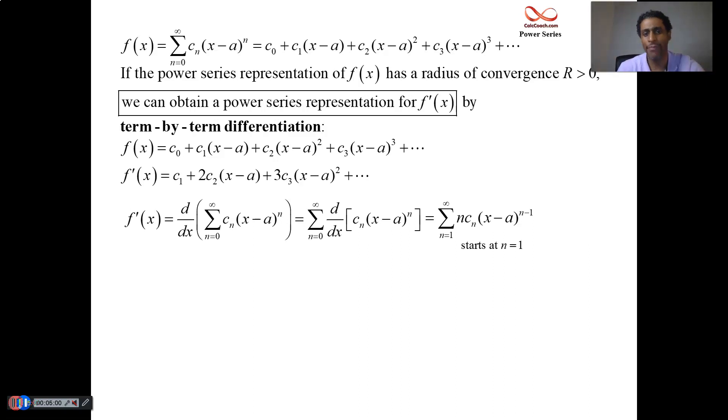Why is that? Well, if it was to start at zero, you'd have a zero because n is right there multiplied by C sub n. And then it would be x minus a who's raised to the negative one. So to avoid that term, just started at one. And so it's not going to change the radius of convergence by taking the derivative. So you'll keep the same.